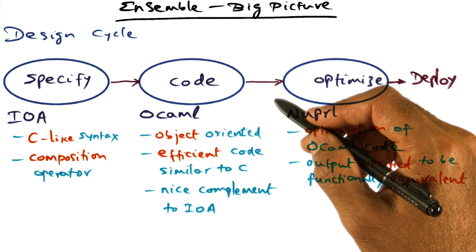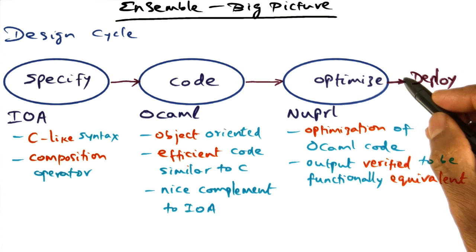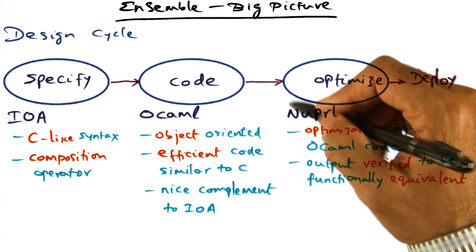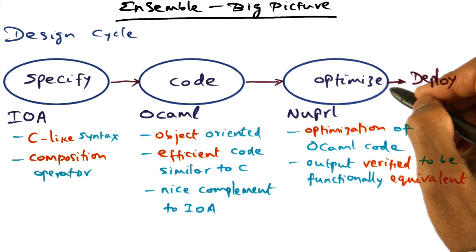Takes this input, unoptimized OCaml code, and produces optimized OCaml code. And the optimized OCaml code can be theoretically verified to be functionally equivalent to the unoptimized input OCaml code. That's the beauty of this theoretical framework.